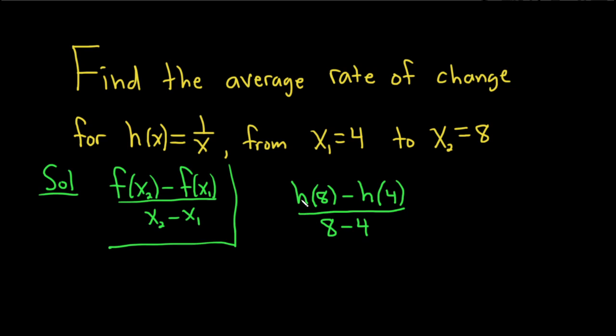Okay, so h of 8 means we have to evaluate h at the value of 8. So we just replace the x with 8, so this is 1 over 8. And minus h of 4 means we plug in 4, so this is 1 over 4. That's all over 8 minus 4, which is just 4.